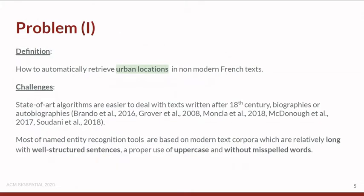The definition of our problem is how to automatically retrieve urban locations in non-modern French texts. State-of-the-art algorithms are easier to apply to modern texts after the 18th century. Most name entity recognition tools are based on modern text corpora like encyclopedic, scientific, or generalistic texts, which are relatively longer with well-structured sentences, proper use of uppercase, and no misspelled words.